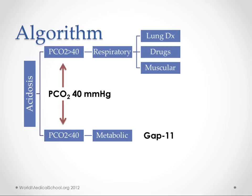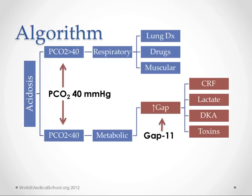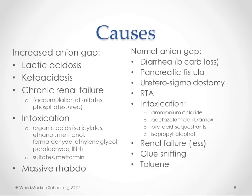Causes of metabolic acidosis — let's talk about the gap first. If normal gap is 11, an increased gap might lead us to think of chronic renal failure, lactate, diabetic ketoacidosis, and toxins. The increased gap means adding something to the system like lactate, or in ketoacidosis we're adding ketones which are also anions. Chronic renal failure, intoxication, and massive rhabdomyolysis are all things that can lead to this.